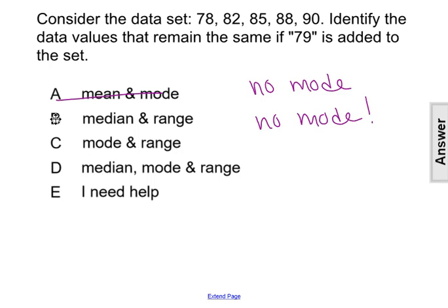From that, we can eliminate choice B because the mode is staying the same and choice B does not have the mode in it. That leaves us with choice C and D. We have the median, mode, and range, or we have just the mode and range.